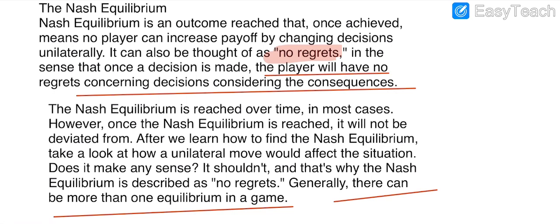The player faces different types of strategies and must choose the strategy that gives them the maximum outcome. Nash equilibrium is used when there is no dominant strategy in the game — in that case the player will have to use Nash equilibrium.